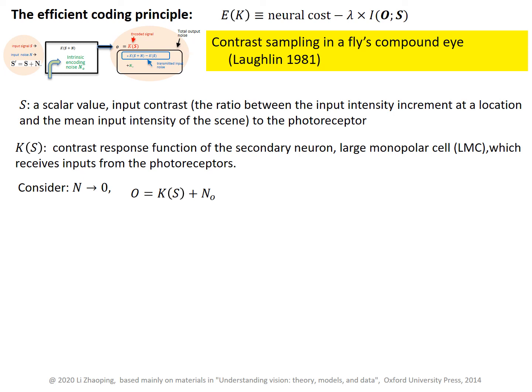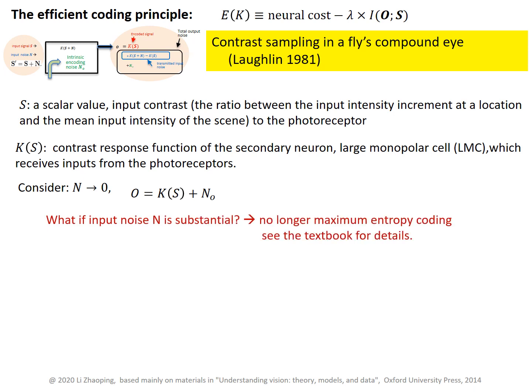We just considered the case when input noise is negligible. But what if the noise is substantial? In such a case, we should no longer use maximum entropy coding. For details, you can look at the textbook.